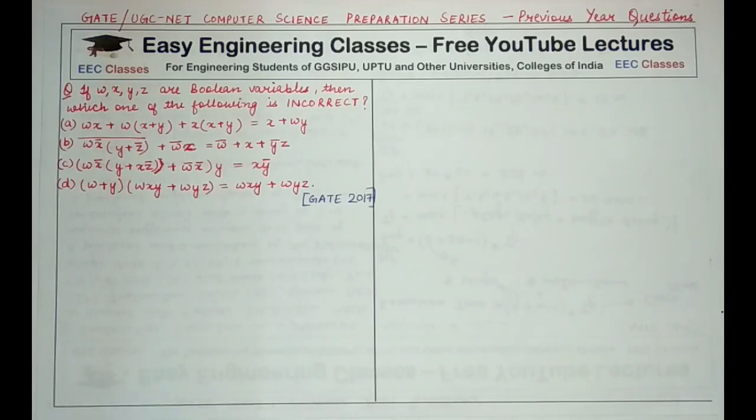This question is not at all difficult, but you need to solve all the parts so that you get to the correct answer. The question is: if W, X, Y and Z are Boolean variables, then which one of the following is incorrect and you are given four options.